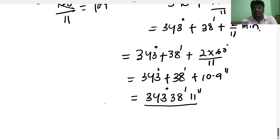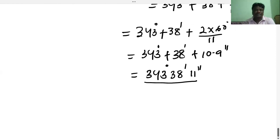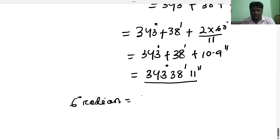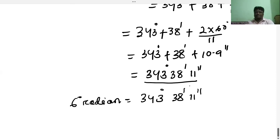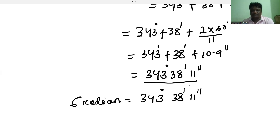So 6 radians was converted to 343 degrees, 38 minutes, 11 seconds. That is the conversion part. Thank you for patiently listening to my teaching. We will discuss again in the next class.